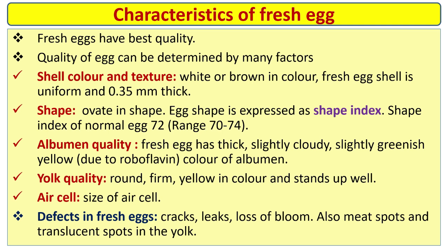Shape: how weight in shape. Egg shape is expressed as a shape index. Shape index of a normal egg is 72, ranging between 70 to 74. The next one is albumin quality. Fresh egg has thick, slightly cloudy albumin.